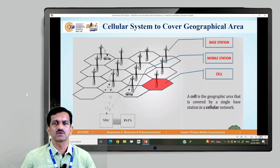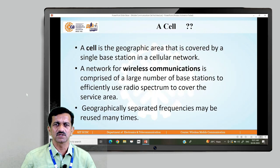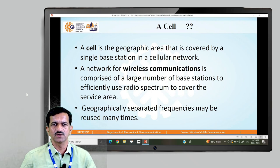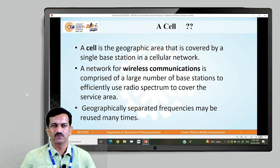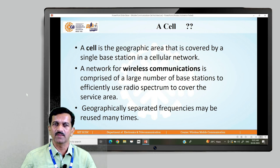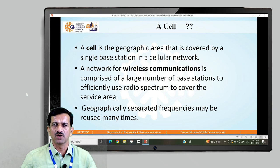We are thinking more about the geographical area covered by the cellular system, which is hexagonal. A cell is a geographic area covered by a single base station in a cellular network. The area occupied under a single base station is known as the cell. This is why a mobile phone is also known as a cell phone — because the geographical area occupied by one particular base station is known as a cell. A network for wireless communication is comprised of a large number of base stations to efficiently use the radio spectrum.